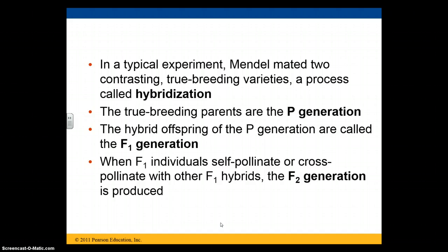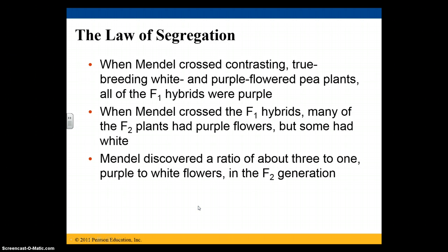When the F1 generation self-pollinates or cross-pollinates with other F1 hybrids, the F2 generation is produced. Mendel crossed contrasting true breeding white and purple flower pea plants, and all of the F1 hybrids were purple. Then when he took all of the purple F1 hybrids, he noticed that most plants had purple flowers in the F2 generation, but some still had white flowers. He discovered this always happened in a ratio of about 3 to 1, purple to white flowers, in the F2 generation.